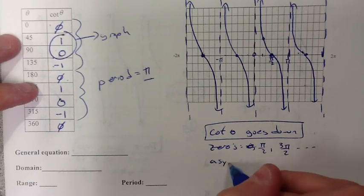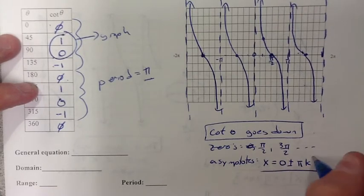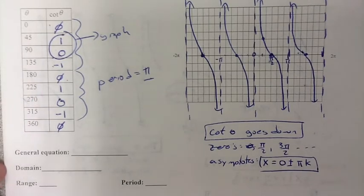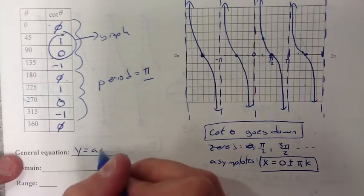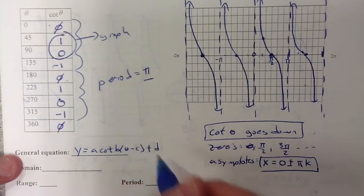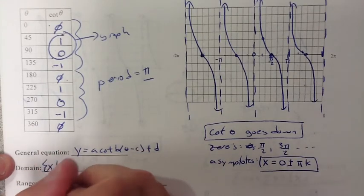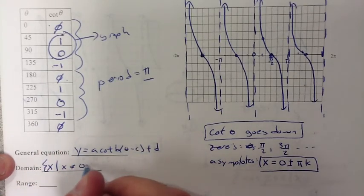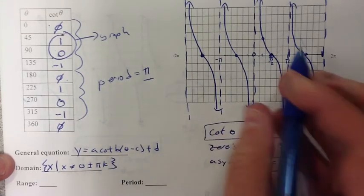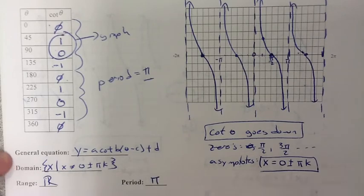Of course, it has our asymptotes at the zeros this time: zero plus or minus πk. It repeats every π units. Our general equation is y = A cot(B(θ - C)) + D. The domain, again, everything but the asymptotes: x cannot equal zero plus or minus πk. The range, just like tangent, all real. And the period, same thing, π.